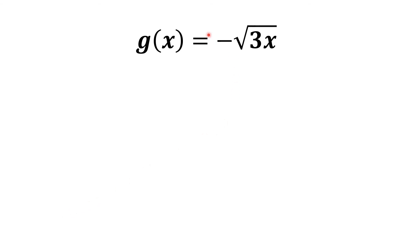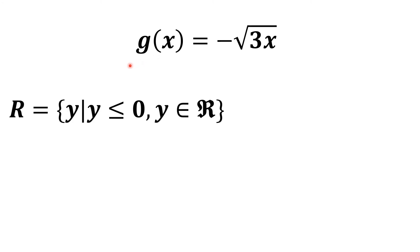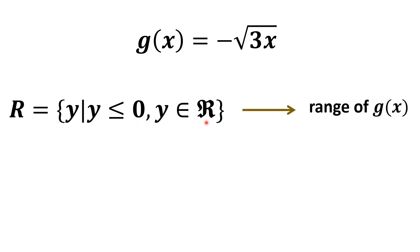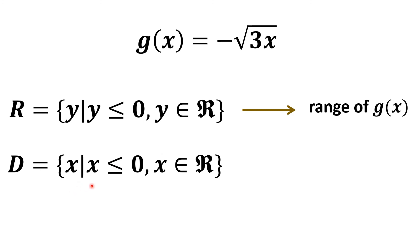Meanwhile, since this is a negative number and the factor under the radical can only be positive or zero: if the radical is positive, then positive times negative gives y is negative; if the radical is zero, then y is zero. Therefore, the range of the original function is the set of y where y is less than or equal to zero and y is an element of real numbers, which is the domain of its inverse.